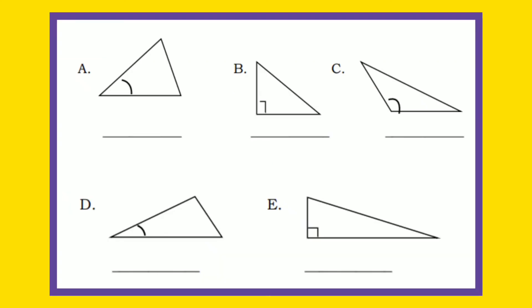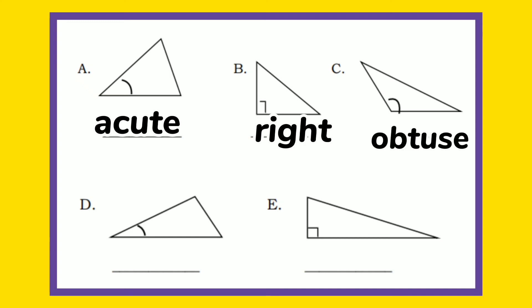Letter A is an acute triangle. Very good. B is a right triangle — you got it right. And C is an obtuse triangle. Very good. Letter D is an acute triangle. And last, letter E is a right triangle. Very good.